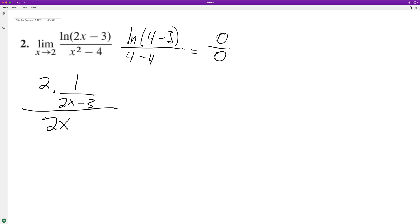This is 2 over 2x minus 3, all over 2x. Plugging in 2, we end up with 2 over 4 minus 3, which is 1.